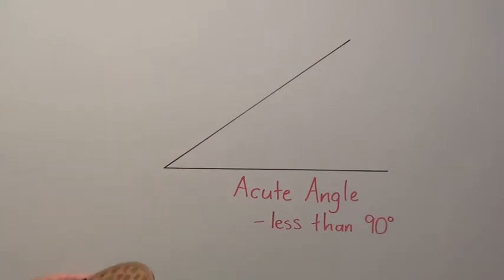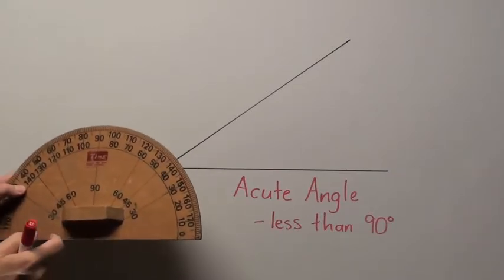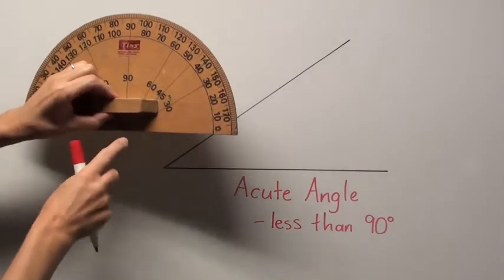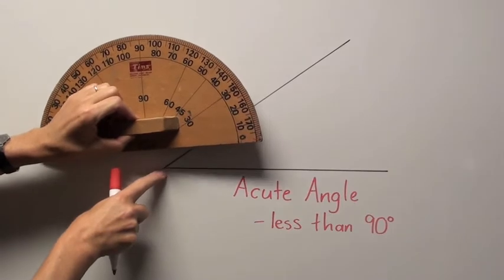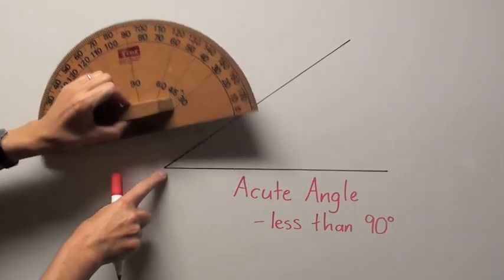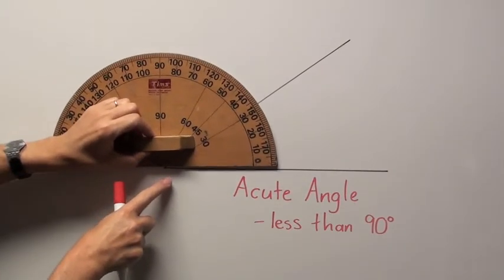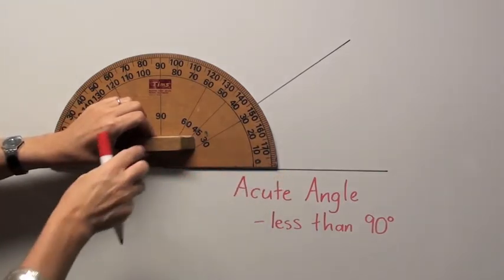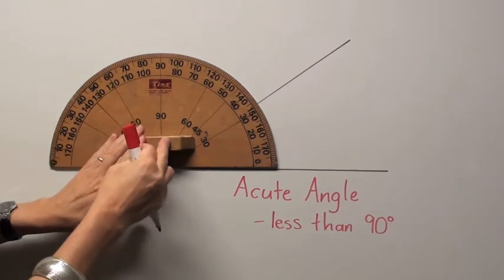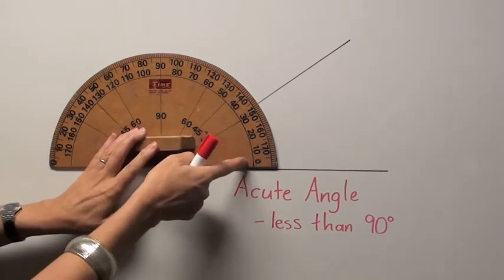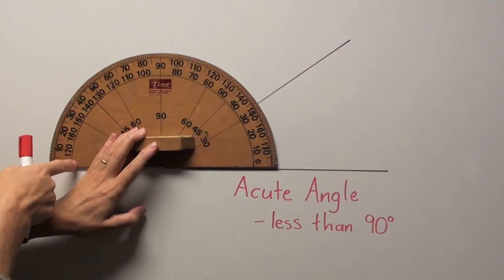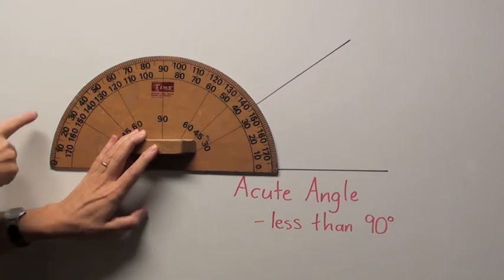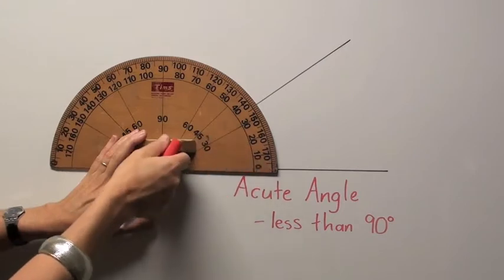So to measure this I need to start with my protractor having the center line going right on the corner of the angle there, that point that must sit there, and the base of the protractor must sit on the bottom line of the angle. Now this is where children tend to become confused. We have zero going all the way around to 180 degrees over here and a zero on this side going to 180 degrees over there.